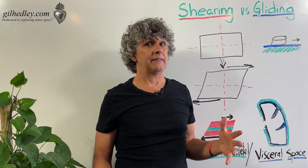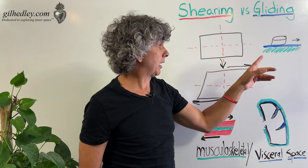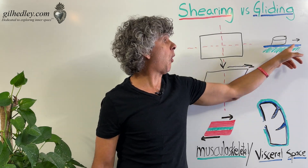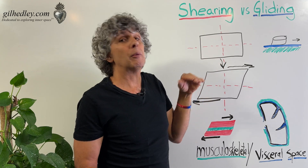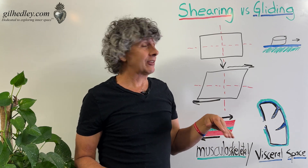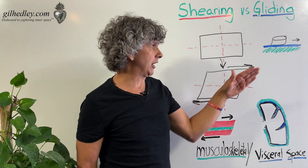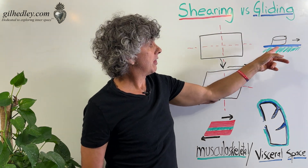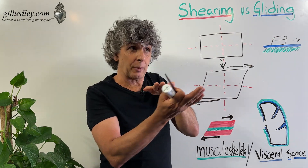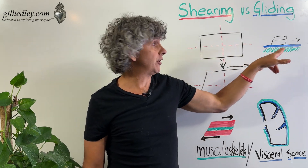Gliding, or true gliding, is best modeled, to my mind, with a hockey puck. There's the hockey puck, and the ice, and the film of water that permits the hockey puck to glide very swiftly over the ice. It's not airborne, it's waterborne. It's a fluid interface between the two things — the ice and the puck — that are demonstrating differential movement. As the puck truly glides, it's skimming along the surface on the water.